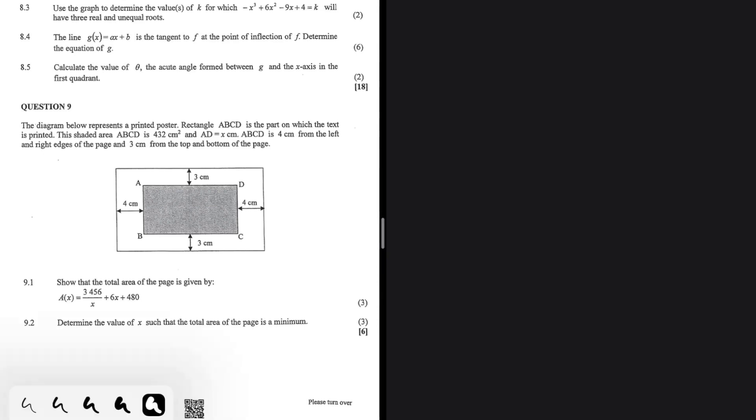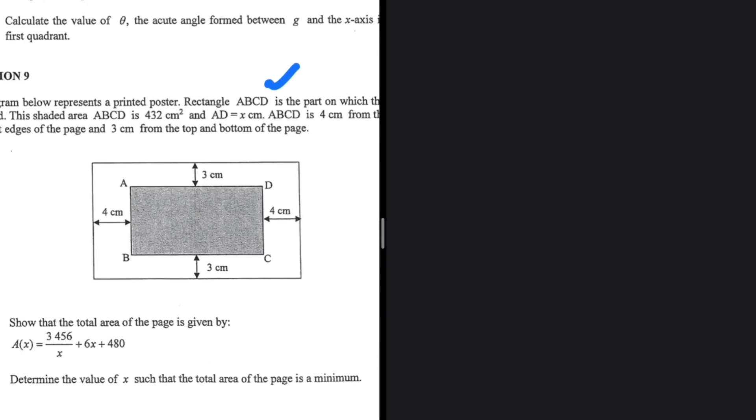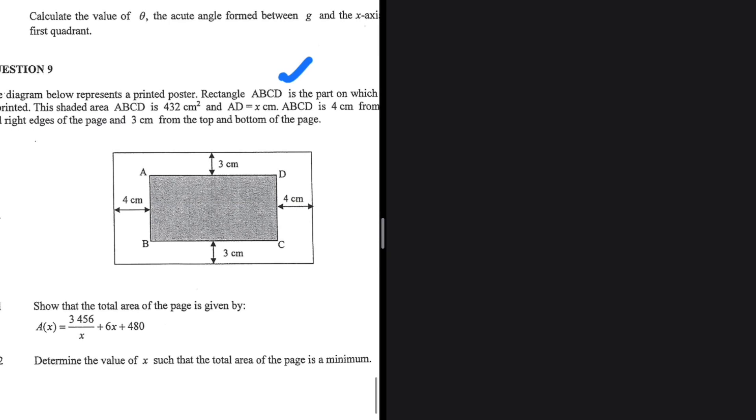The diagram below represents a printed poster. Rectangle ABCD is the part on which the text is printed. The shaded area ABCD is 432 cm² and AD equals x centimeters.